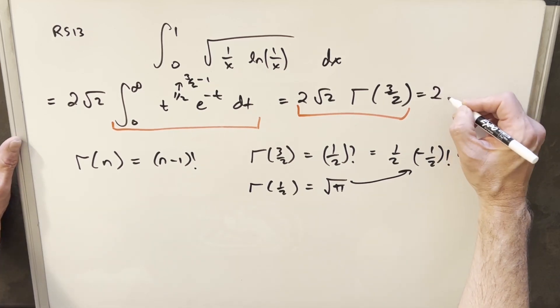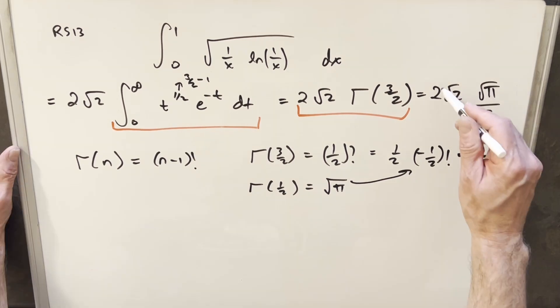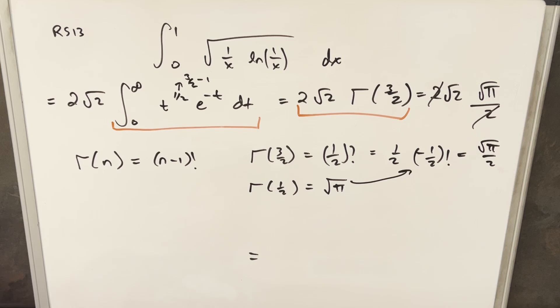Putting this in here, we're going to have 2 square root of 2 times square root of pi over 2. These 2s are going to cancel here. So for our final solution, I'll put this under one radical and we can write it as square root of 2 pi.